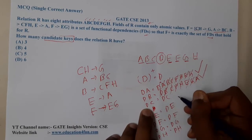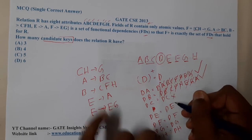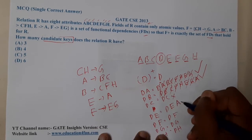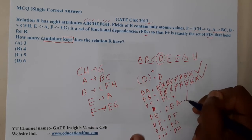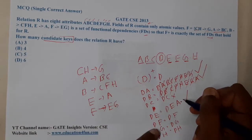Moving on to DE. From E, I can get to A. If I get to A, we'll get to these things. This is also a candidate key. We are done up to three.